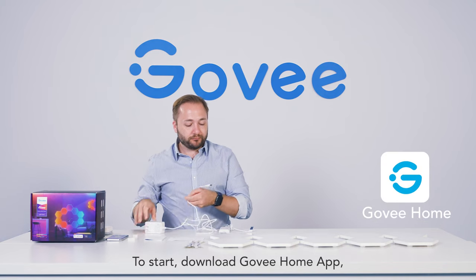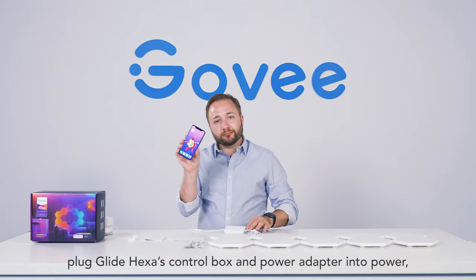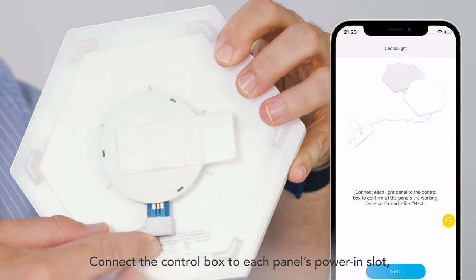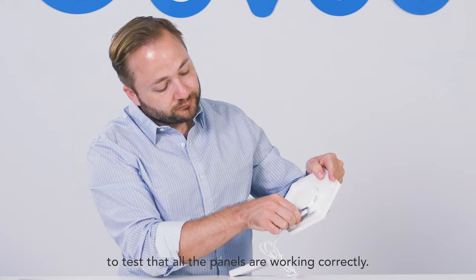To start, download Govi Home app, plug Glide HEXA's control panel and power adapter into power, and pair Glide HEXA with the app. Connect the control box to each panel's power-in slot labeled with an arrow to test that all panels are working correctly.